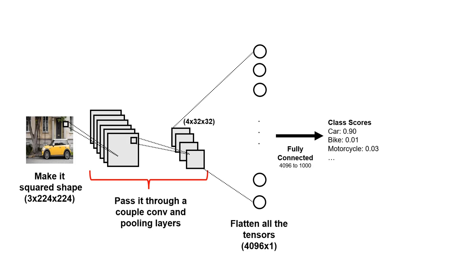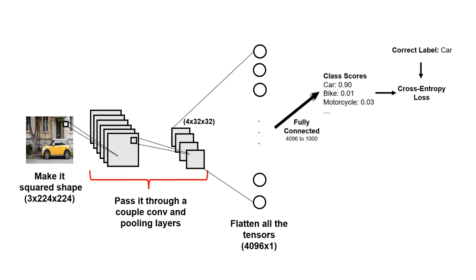Next, we can flatten the tensors or use a global average pooling to have a vector describing all the features. And finally, we can use a fully connected classifier at the end to give us class scores. In this case, since there is a car, it might give us a probability of 90% that there is a car in the picture.